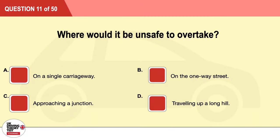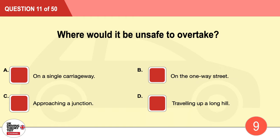Question 11: Where would it be unsafe to overtake? A: On a single carriageway. B: On a one-way street. C: Approaching a junction. D: Traveling up a long hill. The correct answer is C: approaching a junction.